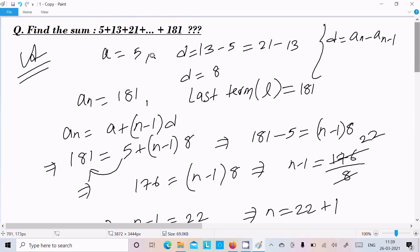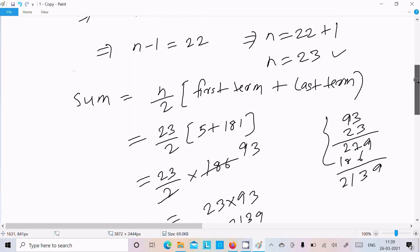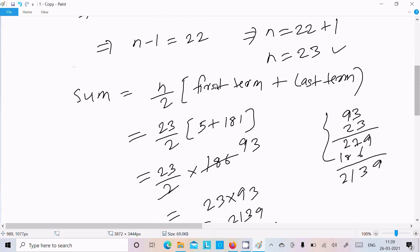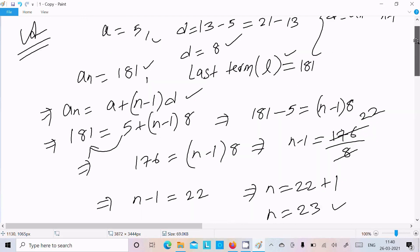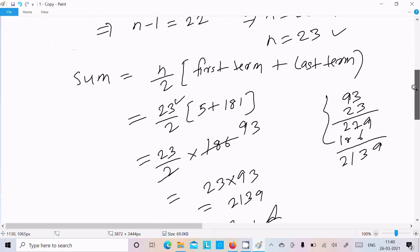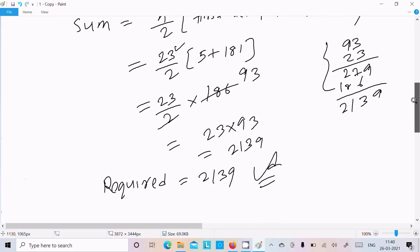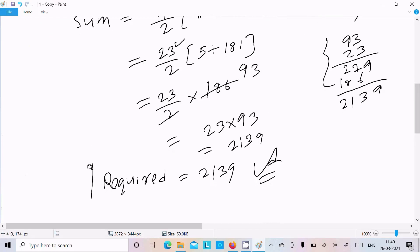So first we need to identify first term, common difference. Here nth term, that is given 181, last term 181. n equals, use the formula AP formula. With the help of this we can easily calculate n. So n is 23. Now sum equals n by 2, first term plus last term. So n that find first term, already know 5, last term 181. So 5 plus 181. So after solving this, this comes 2139. So this is the way we can solve this kind of question.